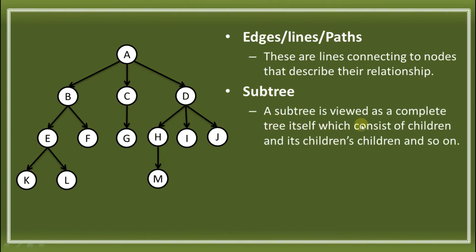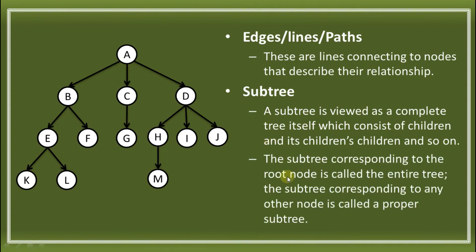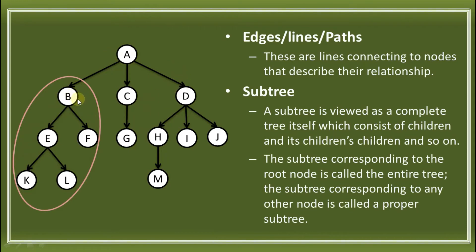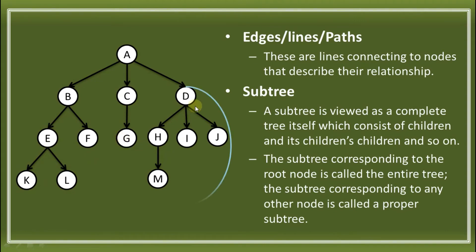We also have the sub-tree. A sub-tree is viewed as a complete tree itself, which consists of children and children's children, and so on. A sub-tree corresponding to the root node is called the entire tree. A sub-tree corresponding to other nodes is called the proper sub-tree. For example, looking only inside a circled portion — that can be considered a sub-tree, viewed as another full tree.